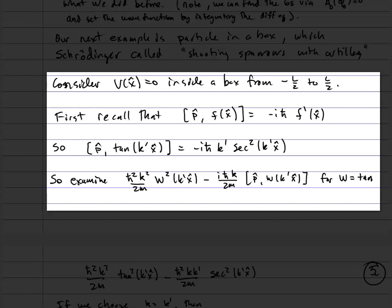Let's examine ℏ²k²/2m · W²(k'x̂) − iℏk/2m · [p̂, W(k'x̂)] for W = tangent. When we plug in W = tan(k'x̂), we get ℏ²k²/2m · tan²(k'x̂) − ℏ²kk'/2m · sec²(k'x̂). If we choose k = k', we get tan²(k'x) − sec²(k'x) = −1, which is a constant. The key identity is tan²(θ) − sec²(θ) = −1, which means the potential coming from W² and the commutator term collapses to a constant, giving V = 0 plus a constant — exactly what we need.